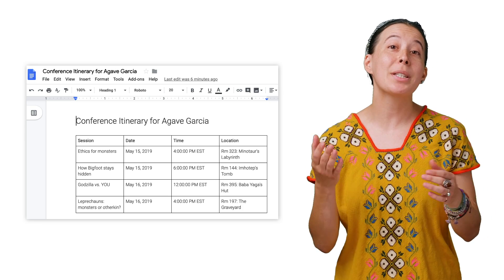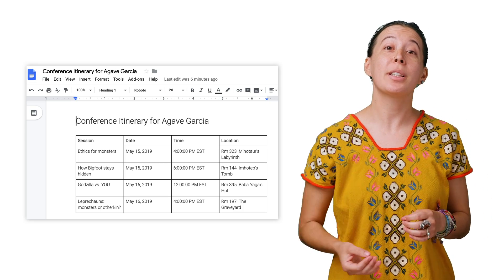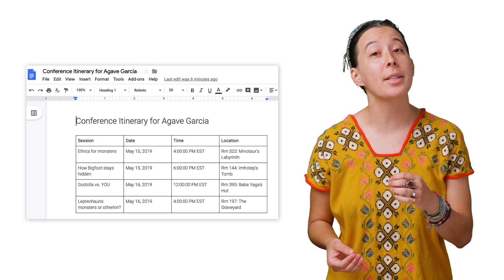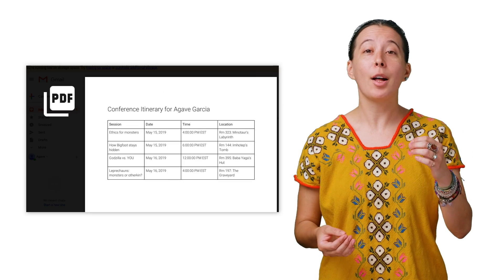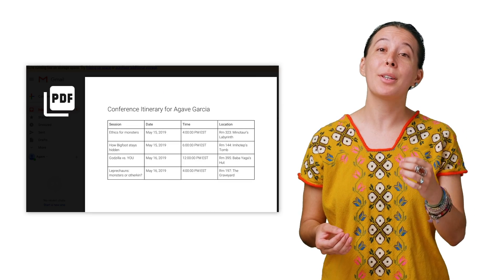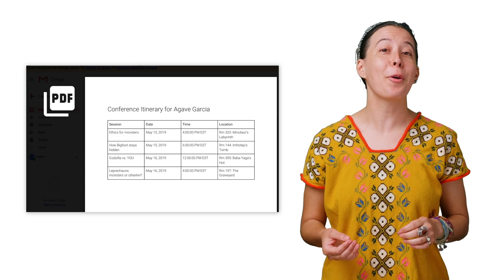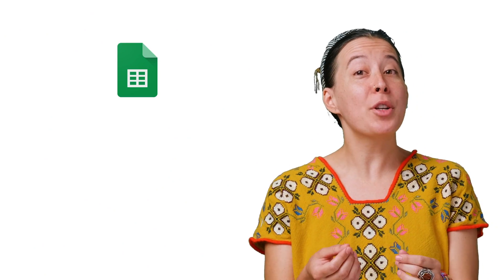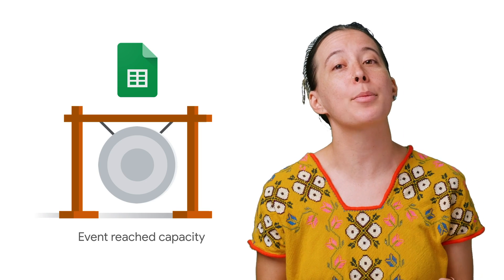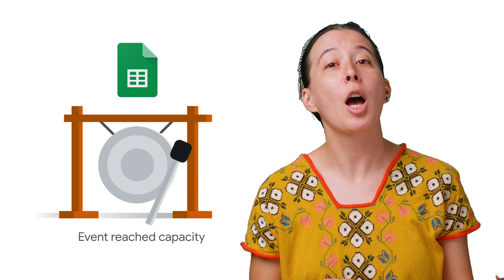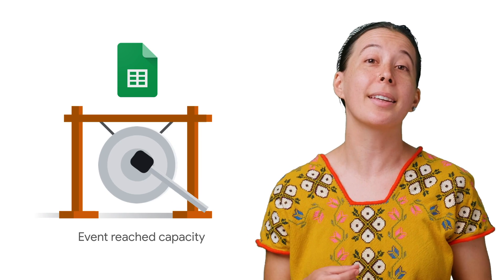The email includes a link to a personalized Google document that displays their agenda within a table, along with an attachment of that same doc in PDF form. Pretty cool stuff! You can also optionally include custom logic to have event items removed upon reaching a certain event capacity.